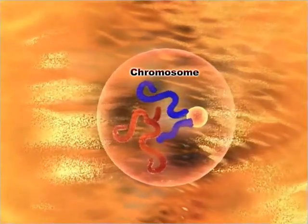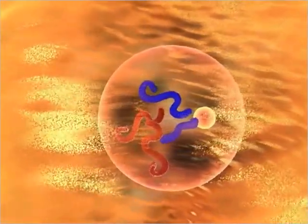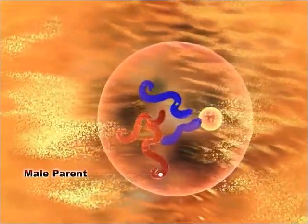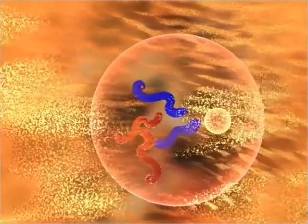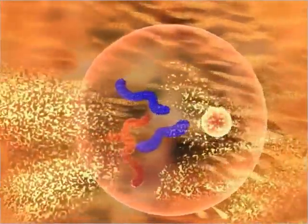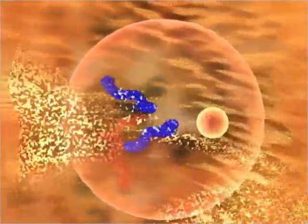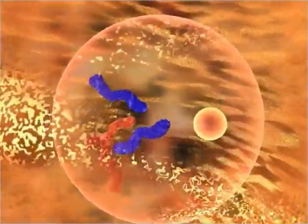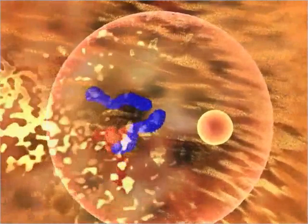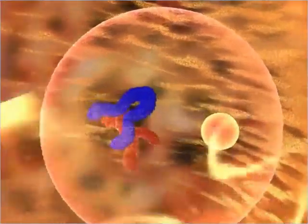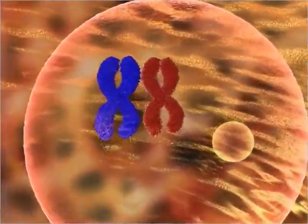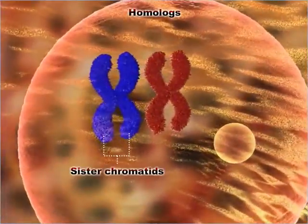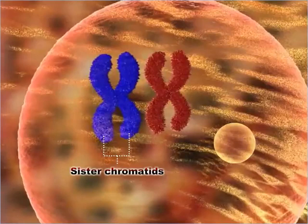Before studying the phases of prophase one, let us understand homologues. Each diploid cell has two copies of each chromosome — one inherited from the male parent and the other from the female parent. These two copies coming from different parents are similar to each other and are called homologues.